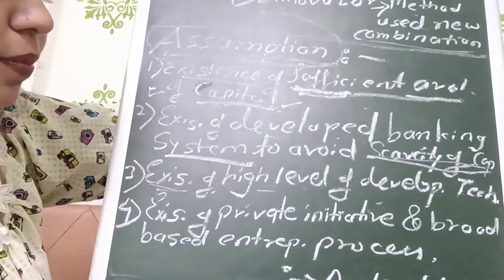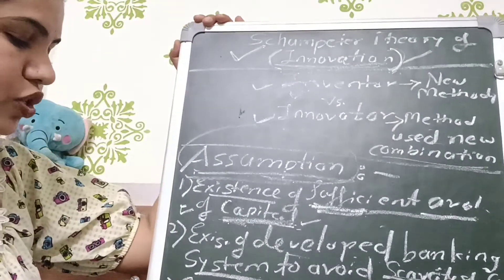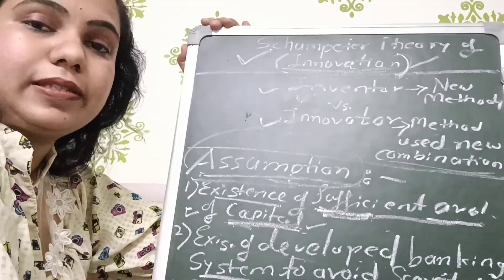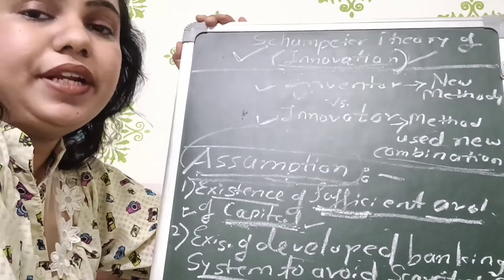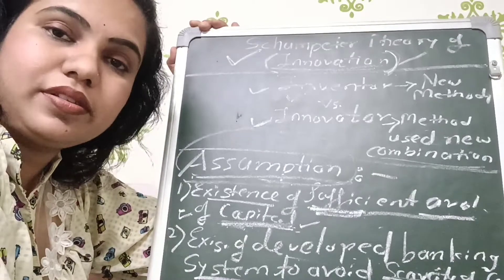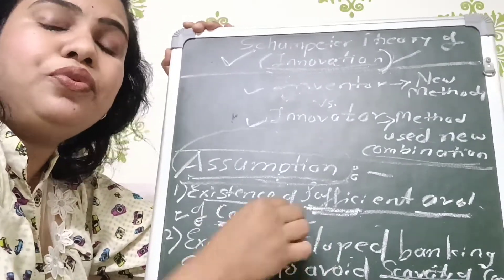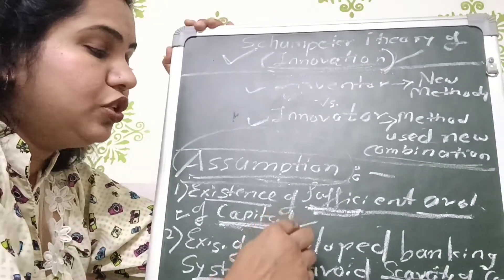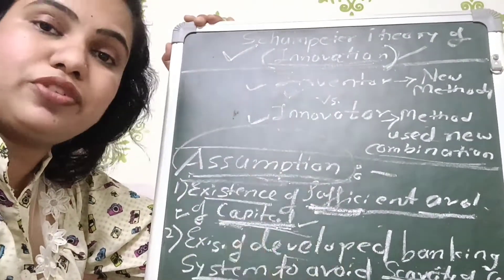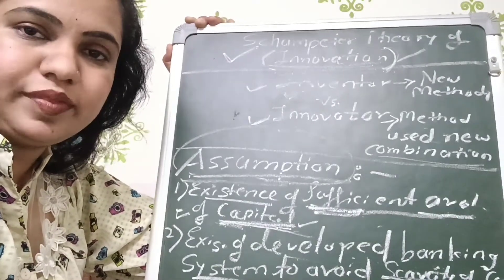The fourth assumption is the existence of private initiative and a broad-based entrepreneurship process, which is very important. Private limited companies should be given maximum approvals so they can grow their business. For example, they can sell shares — your market is open — offer shares to the public, take capital in the form of shares, and utilize it for the development process of their products.